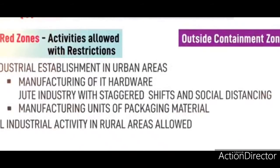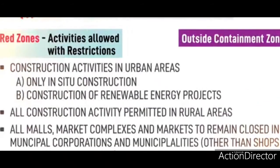Further red zone urban industrial activities allowed with restrictions include manufacturing of IT hardware, jute industry with staggered shifts and social distancing, and manufacturing units of packaging material. All industrial activity in rural areas has been permitted.